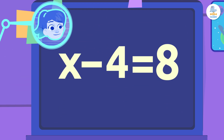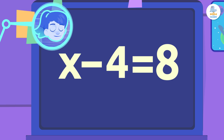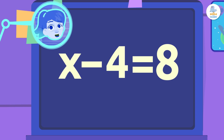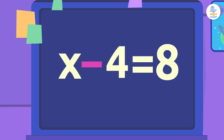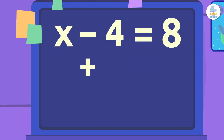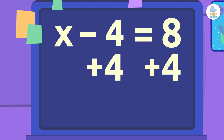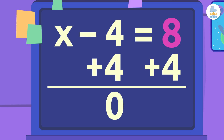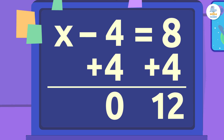Shall we try another one? Remember that we have to isolate the x on one side of the equation. We start with the reverse operation of subtraction: addition! We add 4 to each side of the equation to keep it balanced. Negative 4 plus 4 equals 0. 8 plus 4 equals 12. So x equals 12.